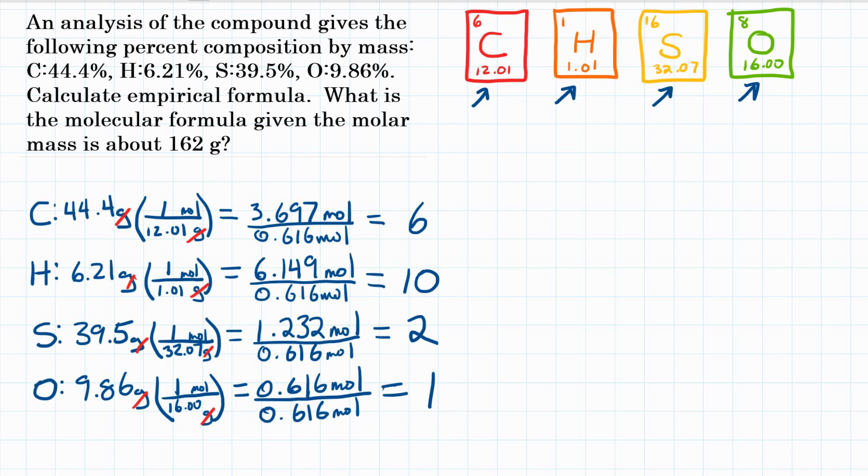We have 6, 10, 2, and 1. So from this, we know our empirical formula is C6, H10, S2, and O1, which we're not going to write because we don't write 1s in our formula. So that is our empirical formula. That is the lowest whole number ratio formula.